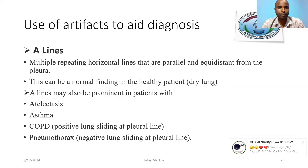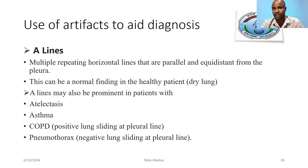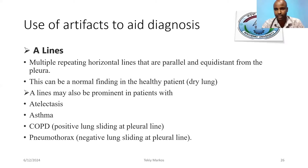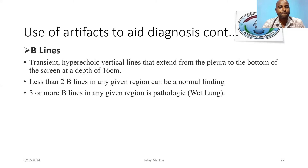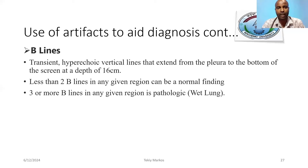A-lines are multiple repeating horizontal lines that are equidistant. This can be a normal finding in healthy patients — dry lungs. It can also be manifested in atelectasis, asthma, and COPD patients. Pneumothorax: if there is positive lung sliding at pleural lines, pneumothorax is ruled out; if negative lung sliding at pleural lines, pneumothorax should be considered.